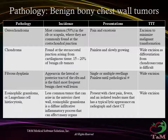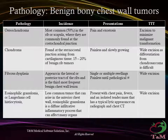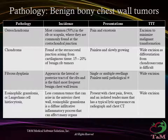Chondromas are typically found at the sternocostal junction arising from cartilaginous tissue. They are relatively common, making up 15-20% of benign chest wall lesions. The distinction between chondroma and low-grade chondrosarcoma is difficult, therefore all chondromas are treated as malignant lesions and wider excision is recommended. Fibrous dysplasia typically appears in the lateral or posterior tract of the ribs and is the third most frequent benign chest wall lesion.